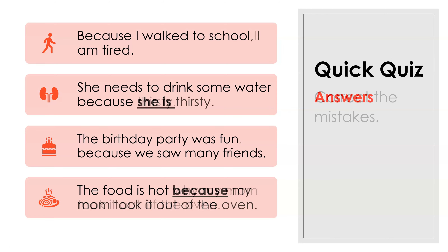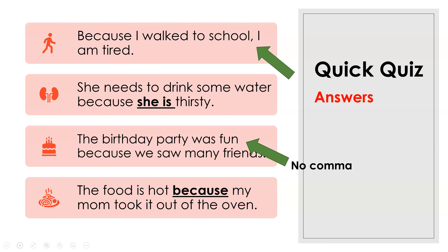Here are the answers. First: 'Because I walk to school, I am tired.' You need a comma after 'school.' Second: 'She needs to drink some water because she is thirsty.' 'She is' is the subject and verb — the original forgot both. Make sure you have a complete sentence after 'because.'